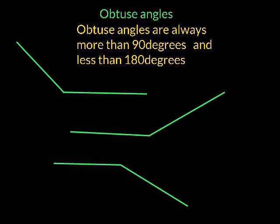Okay, in this video I'm going to be talking about obtuse angles. Obtuse angles are angles that are always more than 90 degrees and less than 180 degrees. In other words, obtuse angles are always larger than a right angle and smaller than a straight line.